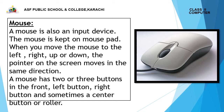Mouse: The mouse is kept on a mouse pad. When you move the mouse to the left, right, up, or down, the pointer on the screen moves in the same direction. A mouse has two or three buttons in the front: a left button, a right button, and sometimes a center button or roller.